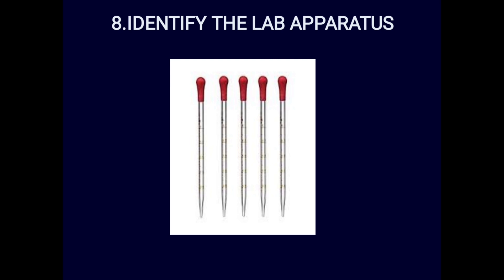Spotter eight: identify the lab apparatus. This is a glass pipette. Nowadays automated pipettes are also available to transfer reagents in micro volumes like 1 ml, 2 ml, 0.5 ml. Glass pipettes are accurate — they are calibrated at certain points. The answer is glass pipette.